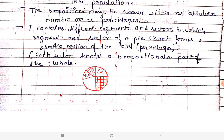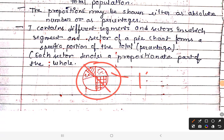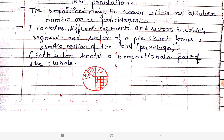Each sector denotes a proportionate part of the whole. That means the whole is 100% — for example, how much carbon is in the atmosphere can be shown in a pie chart. This is the pie chart. So these are three graphical representations of your data — bar graph, histogram, and pie chart, also called circle diagram or sector chart. I hope you are clear. If you like the video, please do like, share, and subscribe. Thank you.